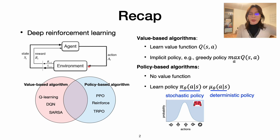We have introduced two kinds of approaches before: value-based algorithm and policy-based algorithm. In the value-based algorithm, the agent only needs to learn value functions to evaluate how good the action is based on the states. It makes a specific policy — for example, the simplest one is a greedy policy like maximizing the Q-value. It's commonly used in DQN or Q-learning.